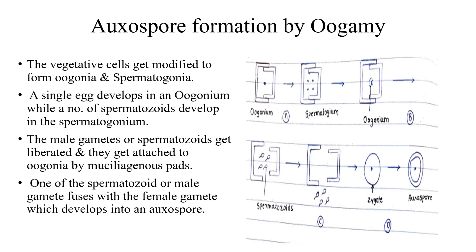That was auxospore formation by isogamy and anisogamy. Now I will separately discuss how auxospore formation takes place by oogamy. The vegetative cells get modified to form oogonia and spermatogonia — the same cells lie side by side close by. A single egg cell develops in the oogonium while a number of spermatozoids develop in the spermatogonium.